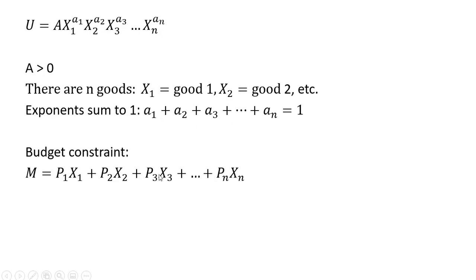The budget constraint looks like this. M is income and P represents the prices.